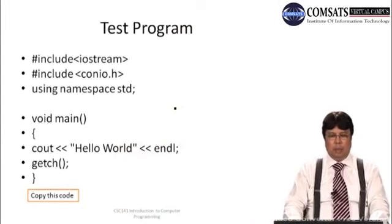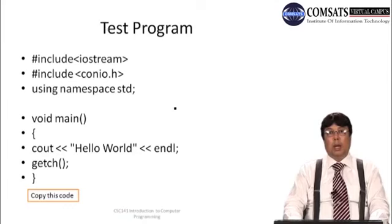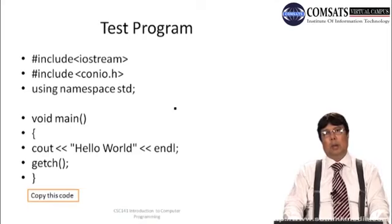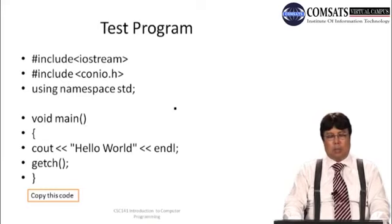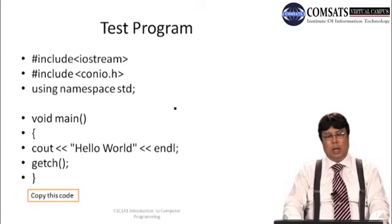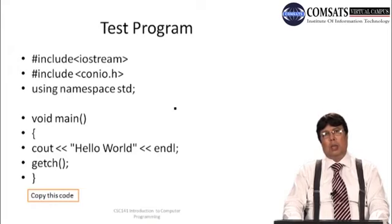This was the program that you copied from your slides. I instructed you to place it in the environment, then compile it, link it, and execute it. We done all these three steps using the simple command called the build command. In this program the first two statements — hash sign include iostream and hash sign include conio.h, which is a header file — I did not explain, and I promised to explain them in the next lecture. So today I would like to explain what we called preprocessor directives or preprocessing directives.